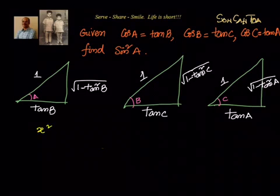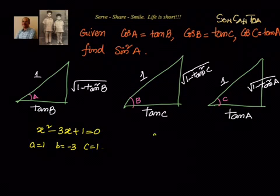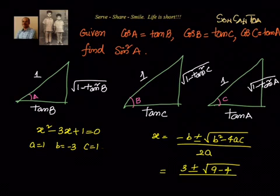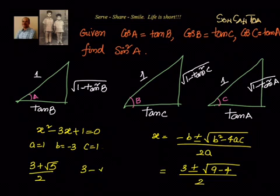So x² minus 3x plus 1 equals 0. Solving by the quadratic formula with a equals 1, b equals minus 3, c equals 1: x equals (minus b ± √(b² minus 4ac)) divided by 2a. Substituting: x equals (3 ± √(9 minus 4)) divided by 2, giving x equals (3 + √5) / 2 or x equals (3 minus √5) / 2.